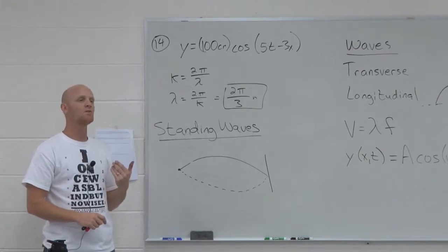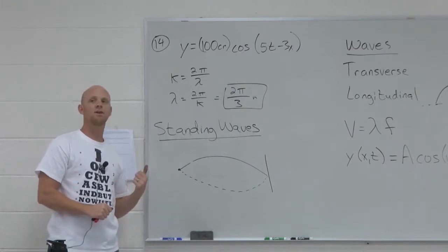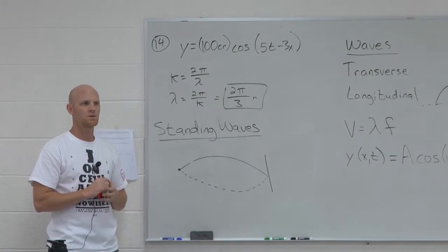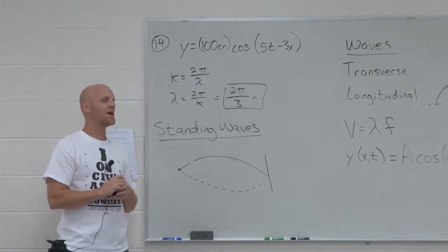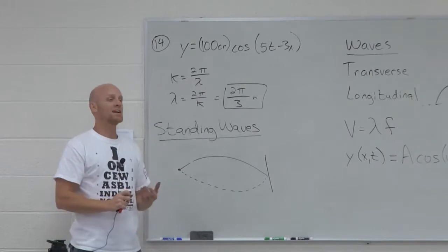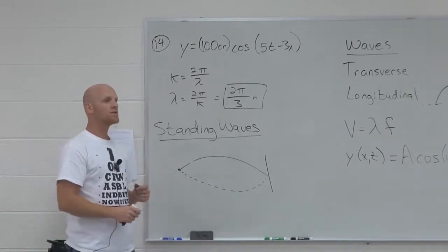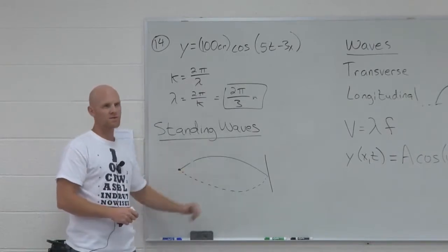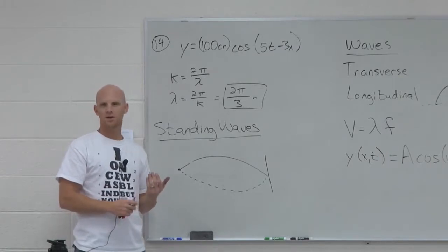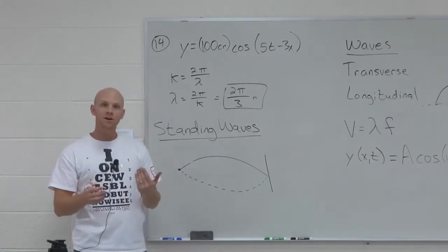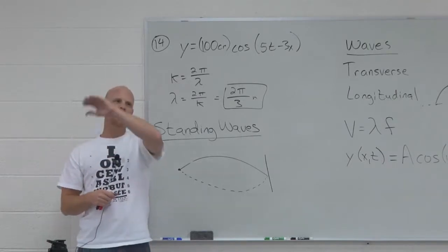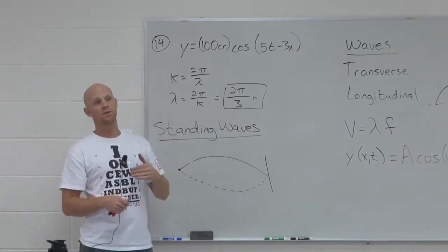A standing wave has what we call fixed nodes. What's a node? Where they're not waving — where there's no vertical displacement whatsoever. A node technically is a value where some sort of wave-type function goes to zero. If you look at a sine function, wherever the sine function crosses zero, that's called a node.